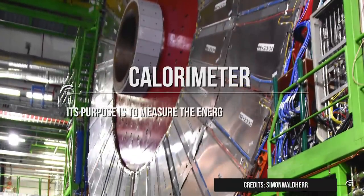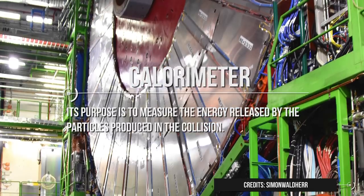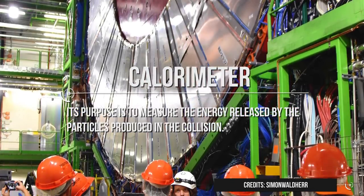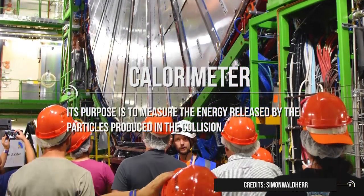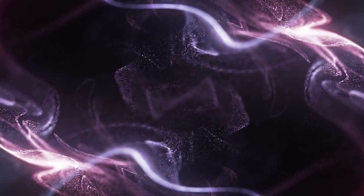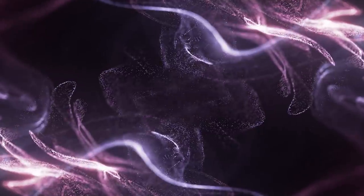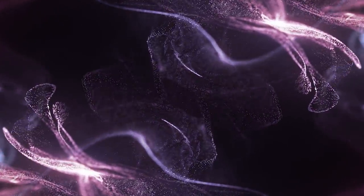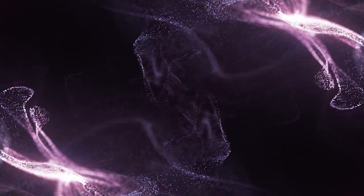Another sub-detector of CMS is the calorimeter. Its purpose is to measure the energy released by the particles produced in the collision. It is made of special crystals of a particular material, lead tungstate. When a particle passes through it, this material emits a cascade of electrons and light. And by measuring the amount of light produced, scientists can infer the initial energy of the particle.